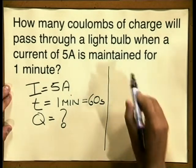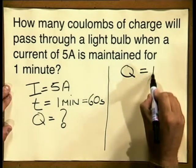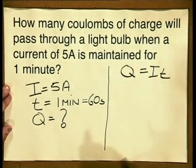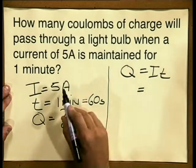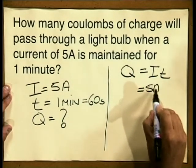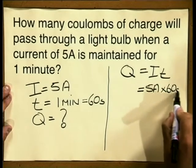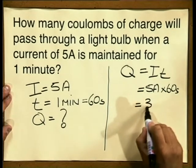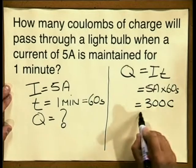Now let me write down my equation: q is equal to i times t. I will now substitute into the formula — i is 5 amperes, time is 60 seconds — and therefore my charge is 300 coulombs.